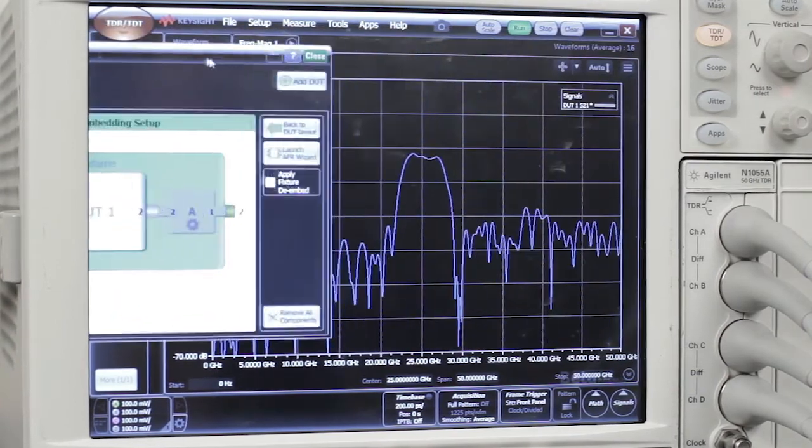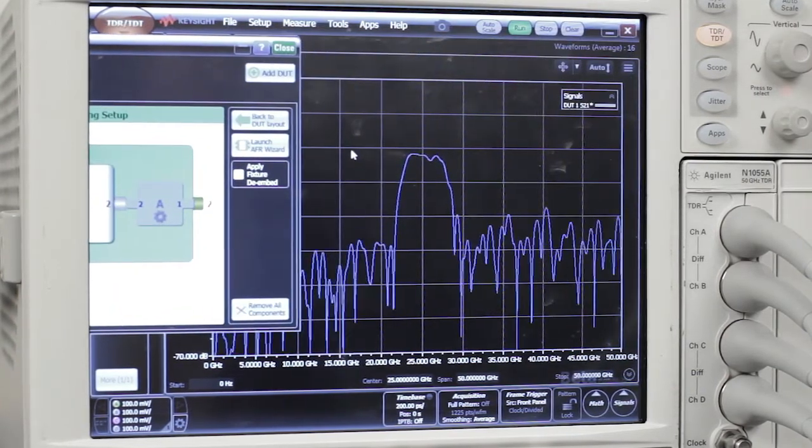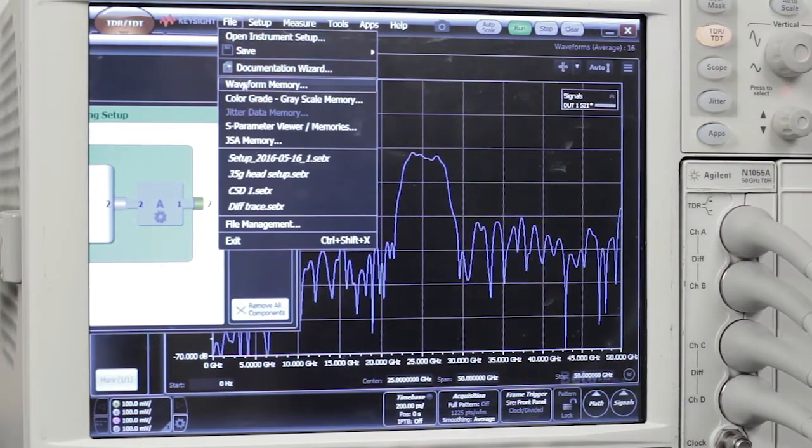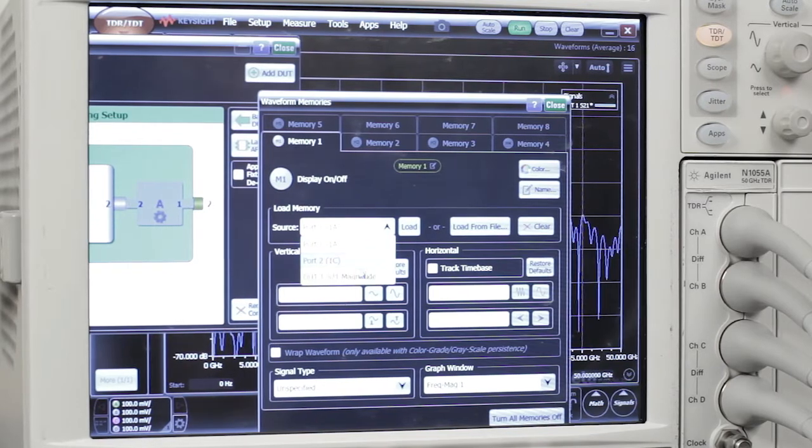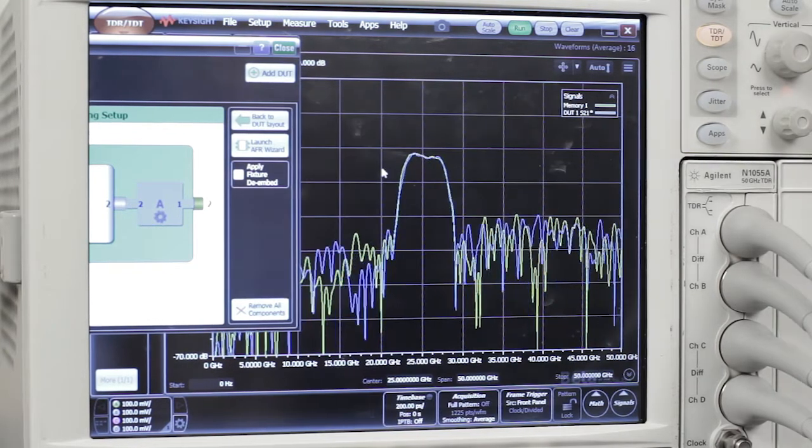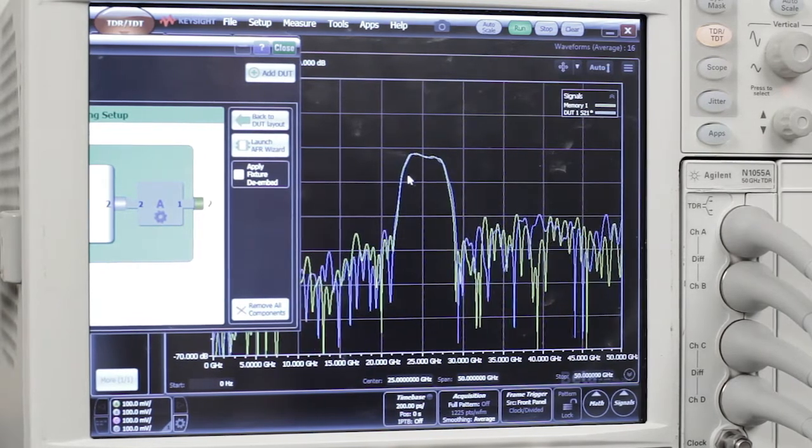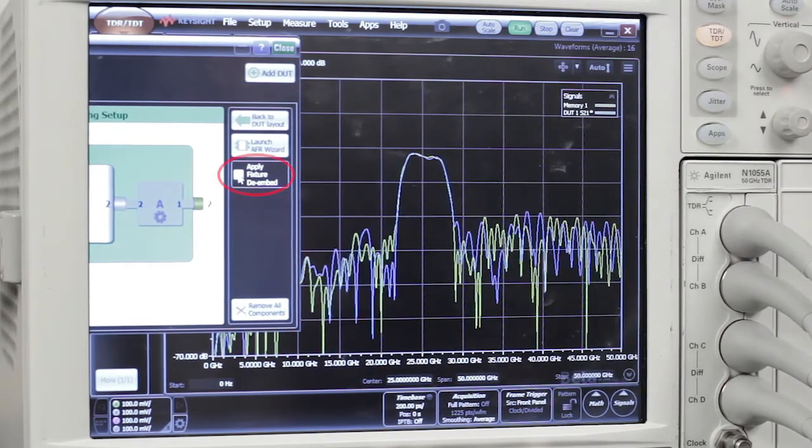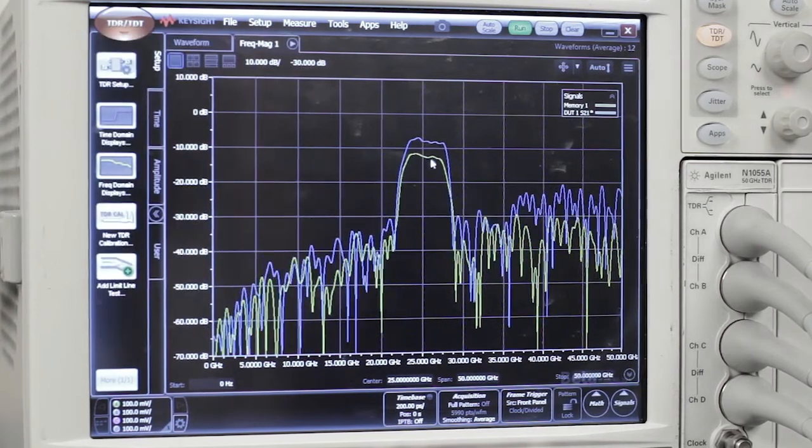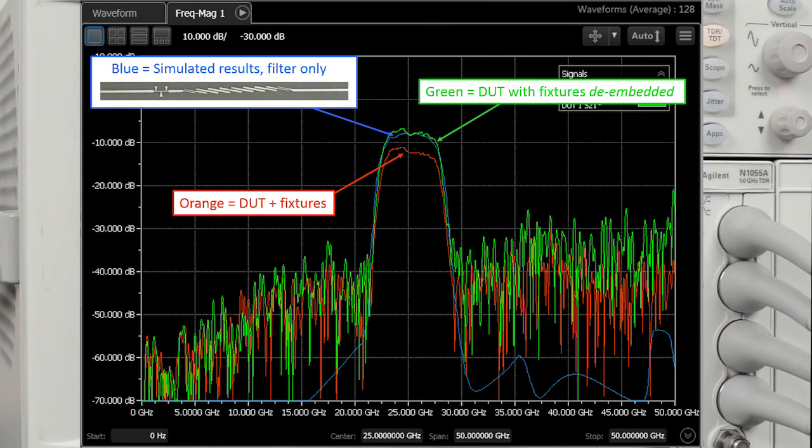We'll just slide this out of the way. And you can see our insertion loss. I can just save that. So there we have the insertion loss saved with the fixtures in place. And now we will de-embed the two fixtures. And you can see the difference. I have much less insertion loss in the passband.